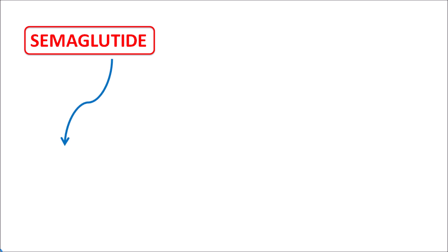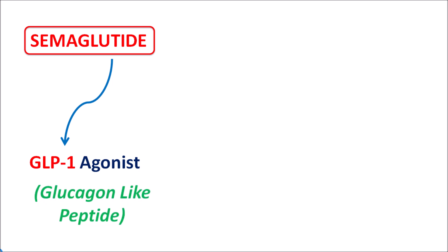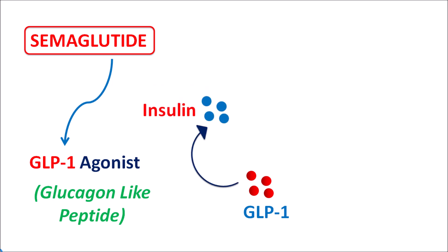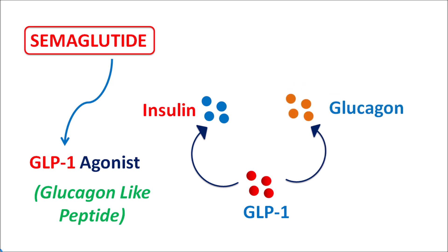Semaglutide is classified as a GLP-1 receptor agonist. GLP stands for glucagon-like peptide. GLP-1 can control blood glucose levels by increasing insulin secretion from the pancreas, and it also modulates glucagon action, which opposes the elevation of blood glucose levels.